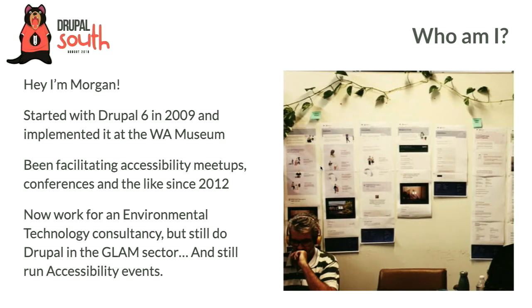I should get started with who I am. Hi, I'm Morgan. I started with Drupal way back in 2009 — that's 10 years, starting with Drupal 6 — and I implemented that as digital services manager at the WA Museum. I've been facilitating meetups and conferences in the accessibility space since about 2012. I now work for an environmental technology consultancy, but I still do a lot of Drupal in the GLAM space — museums and archives — and I still run the meetup group in Brisbane for accessibility.